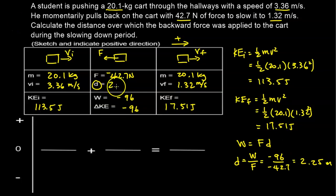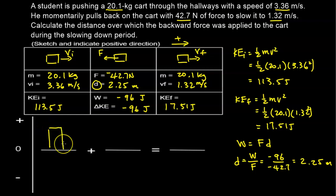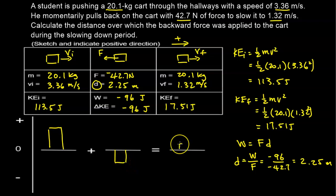The distance over which the backward force was applied is 2.25 meters. A bar chart helps illustrate this: we start with about 113.5 joules of kinetic energy, negative work reduces it, and we end with 17.5 joules of kinetic energy remaining.